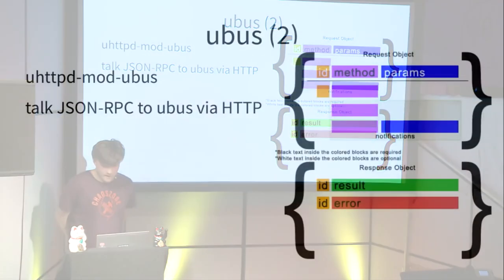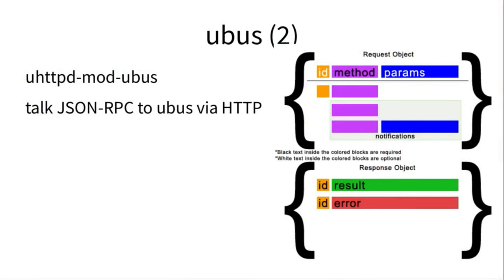You can then talk JSON-RPC to mubus from the browser, from curl, or from whatever tool you prefer. JSON-RPC is pretty simple — if you're familiar with REST APIs it's a different approach, but the overall browser interface experience is very similar.